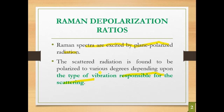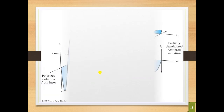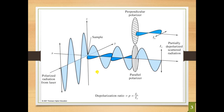As we know from the principle, the scattering occurs because of vibration of the molecule. This will be made clear by an example. This diagram shows the depolarization resulting from Raman scattering. Here you can see our sample, with polarized radiation coming from the laser being provided to the sample.